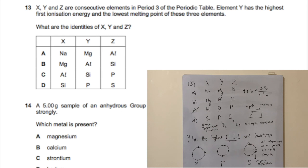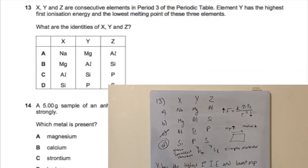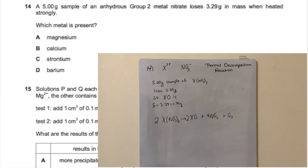Phosphorus also has a lower melting point than sulfur because P₄ has fewer electrons, meaning weaker London dispersion forces, so less energy is needed to break the intermolecular bonds. Therefore the answer is D.